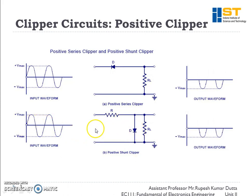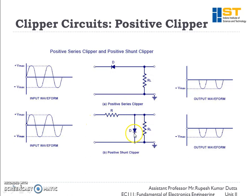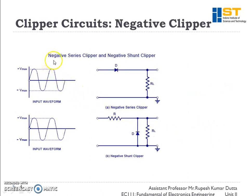In the positive shunt clipper, when a positive wave is applied, the diode becomes forward biased — positive voltage is applied to the P terminal — so the diode shorts and all signal passes through the diode path, with no signal reaching the load. In the negative half cycle the diode is reverse biased, it opens, and all signals pass to the load. So positive half cycles are clipped.